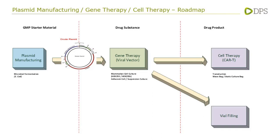The plasmid manufacturing process is a segregated, independent process. The plasmids are then provided as a GMP starter material to the therapy manufacturing process. The gene therapy produced is either an in vivo gene therapy — formulated, filled, and injected into the patient — or it becomes a component required for a further manufacturing process such as ex vivo CAR-T. Adeno-associated virus and adenovirus would be typical examples of in vivo gene therapy, and lentiviral vector would be an example of the vector system utilized in CAR-T cell therapy.